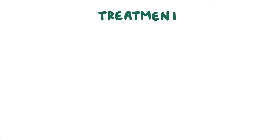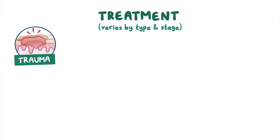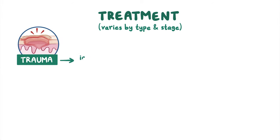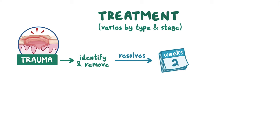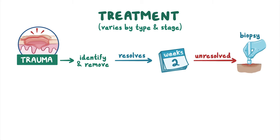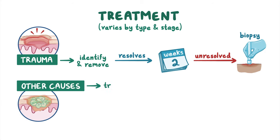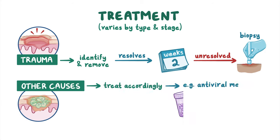The prognosis and treatment will vary by ulcer type and stage of identification. If trauma caused the ulceration, it must be identified and removed. After the local irritating factor is removed, the lesion should resolve within two weeks. The standard of care is to biopsy an unresolved ulcer after two weeks. Other causes of ulcers should be treated accordingly, such as antiviral medications for herpes simplex.